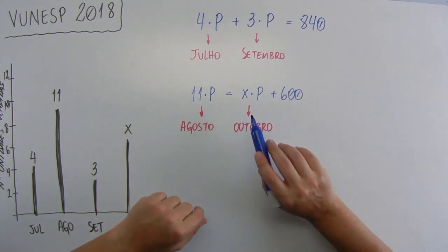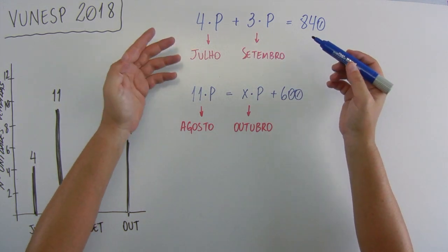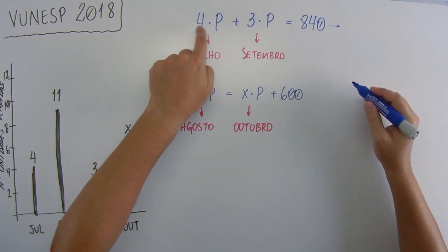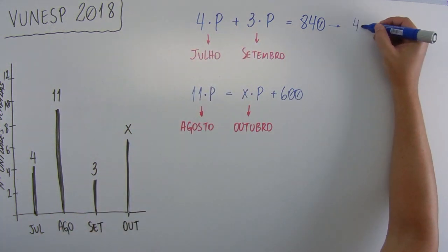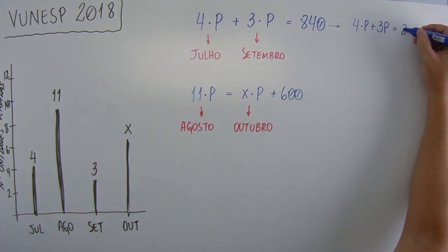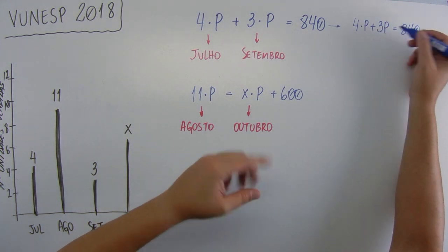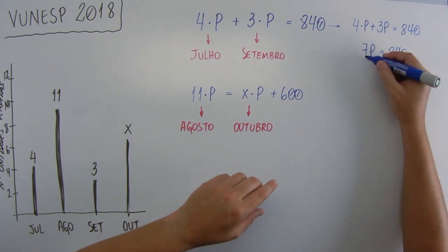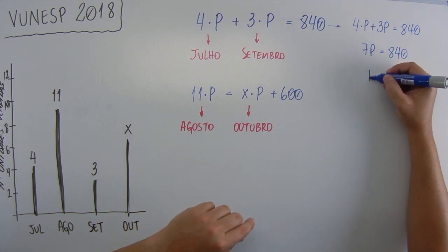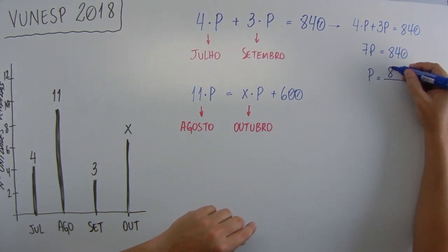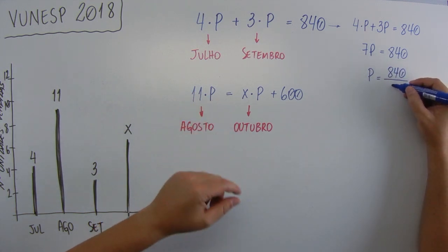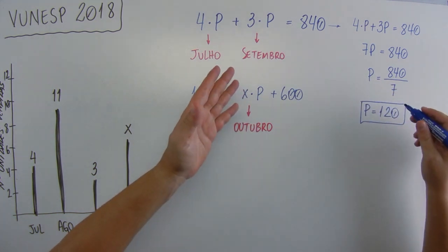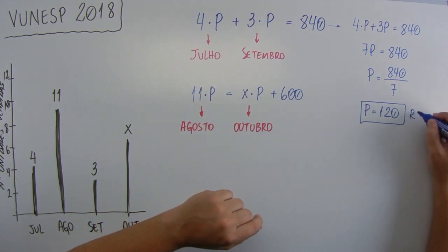Ele quer esse X aqui. Agora vamos encontrar o valor unitário. 4P mais 3P é igual a 840. 4P mais 3P, 7P, igual a 840. Esse 7 que está multiplicando vai passar dividindo. P igual a 840 dividido por 7. P igual a 120. Quer dizer que o produto custa 120 reais.